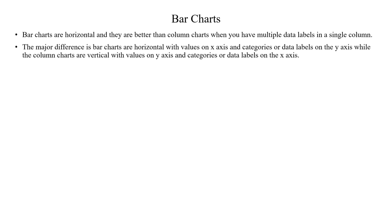If you look at bar charts versus column charts, the bar chart is horizontal. The revenue details are in the same values. Categories or data labels — like city, product category, country — are on the y-axis.